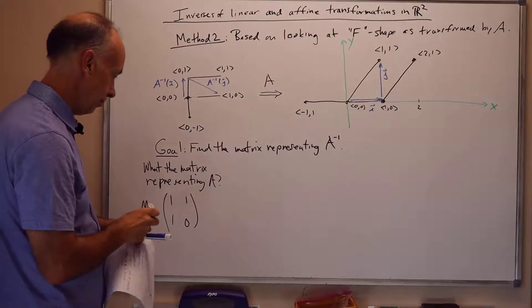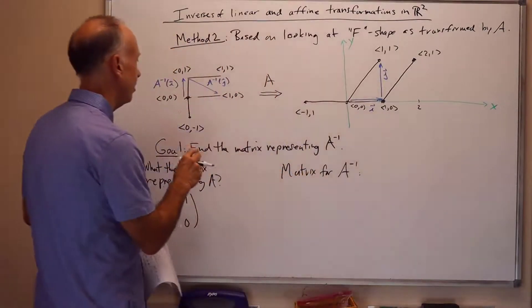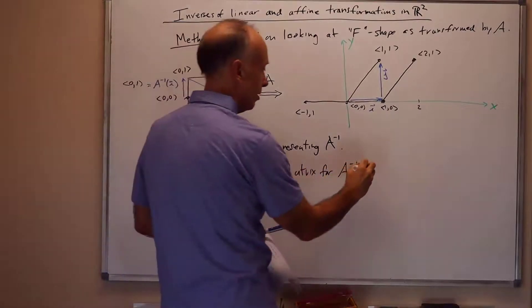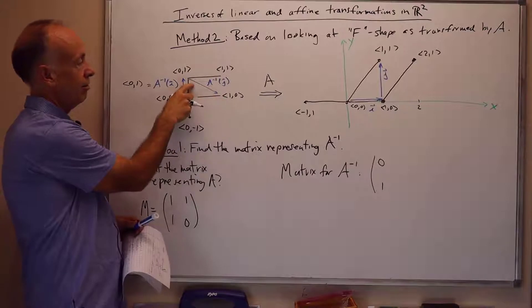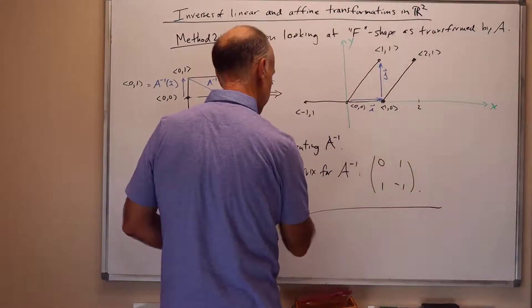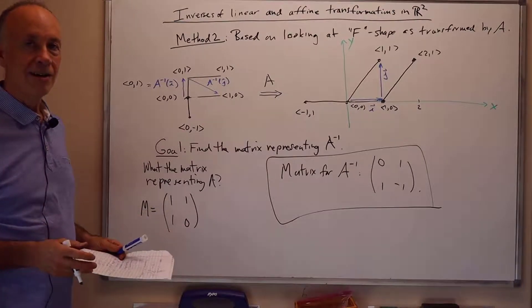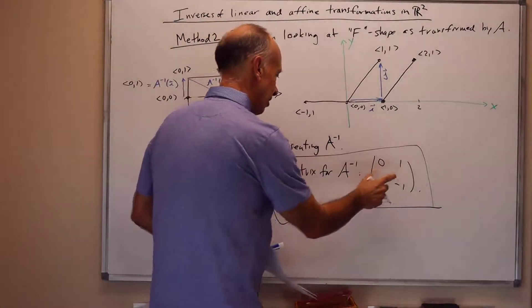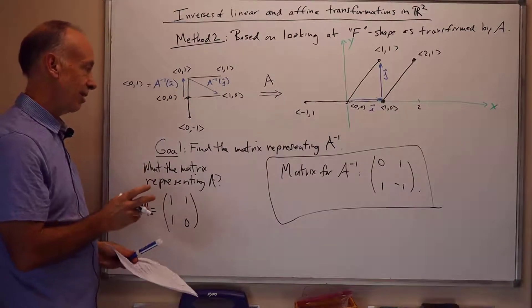Now we can write out the matrix immediately. The matrix representing A inverse. We can just look at this and say, well, A inverse i is the vector of 0,1. So, the first column is 0,1. And A inverse of j is the vector from 0,1 down to 1,0. So, it's plus 1 in the x direction and minus 1 in the y direction. So, it's 1 minus 1. And there's our answer. This is the matrix representing A inverse. So, it gives a very pictorial way to see how to get inverses here, which can be handy when you're building transformations by hand. You can always check this by multiplying the matrix for A inverse times the matrix by A. You should get the identity matrix when you multiply those two things together. And that's how you check that the answer is correct, if you wish.